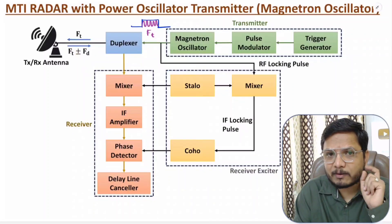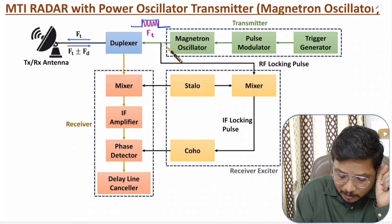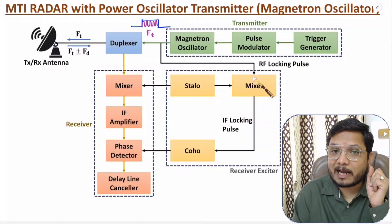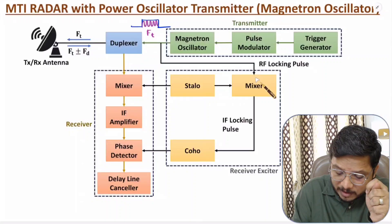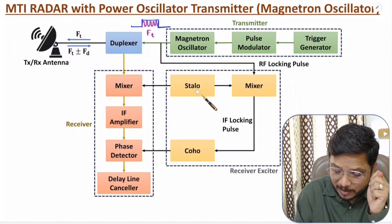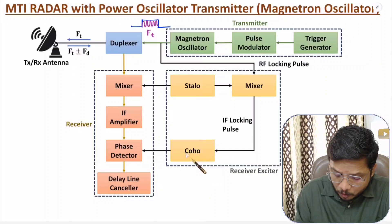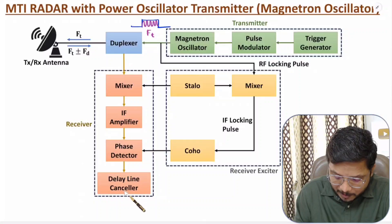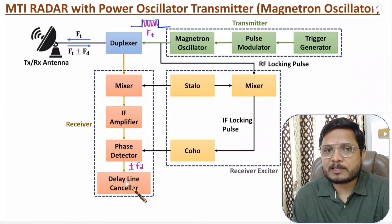That signal is given to the duplexer. In the receiver exciter, a partial signal from the magnetron oscillator is taken to the mixer for the RF locking pulse. After that the mixer is connected with STALO to generate an IF locking pulse, and this IF locking pulse is given to COHO. COHO detects the phase, and at the output we have the delay line canceller with signal plus or minus FD.